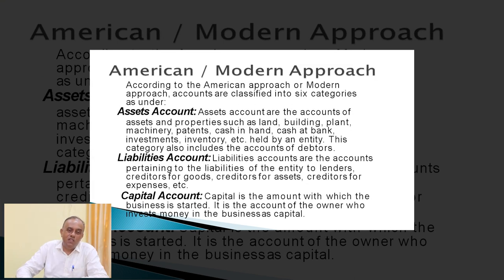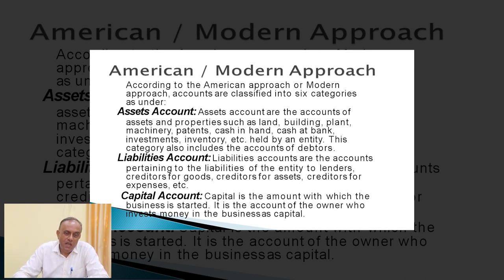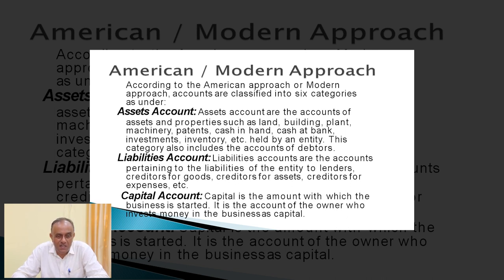Another approach is the American or modern approach. According to the American approach, accounts are classified under six categories: number one, assets; number two, liabilities; number three, capital; number four, revenue; number five, expense account; and number six, withdrawal account.